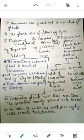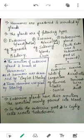If a gland has that tube-like structure, it is known as an exocrine gland — examples include the salivary gland and liver. If a gland does not have a tube-like structure or a duct, then those glands are known as endocrine glands. In this chapter, we are going to discuss endocrine glands only — examples include the thyroid and pituitary glands.